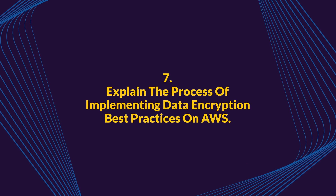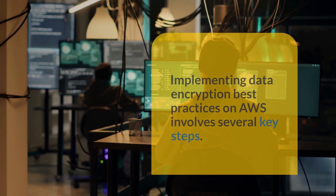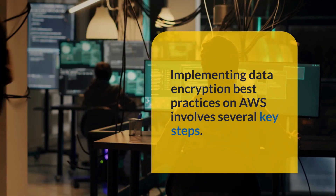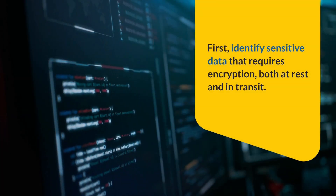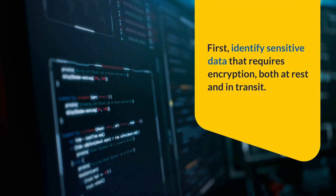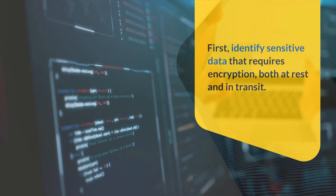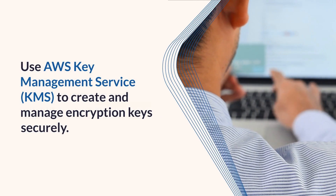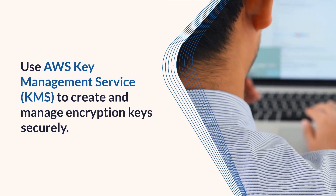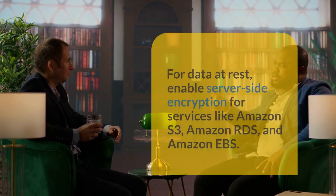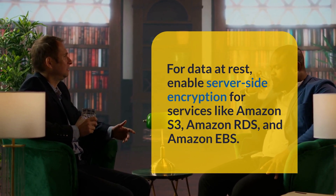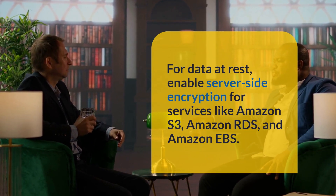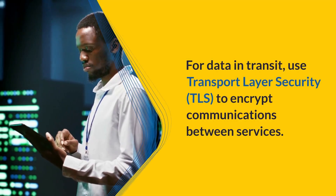Question 7: Explain the process of implementing data encryption best practices on AWS. Implementing data encryption best practices on AWS involves several key steps. First, identify sensitive data that requires encryption, both at rest and in transit. Use AWS Key Management Service (KMS) to create and manage encryption keys securely. For data at rest, enable server-side encryption for services like Amazon S3, Amazon RDS, and Amazon EBS.